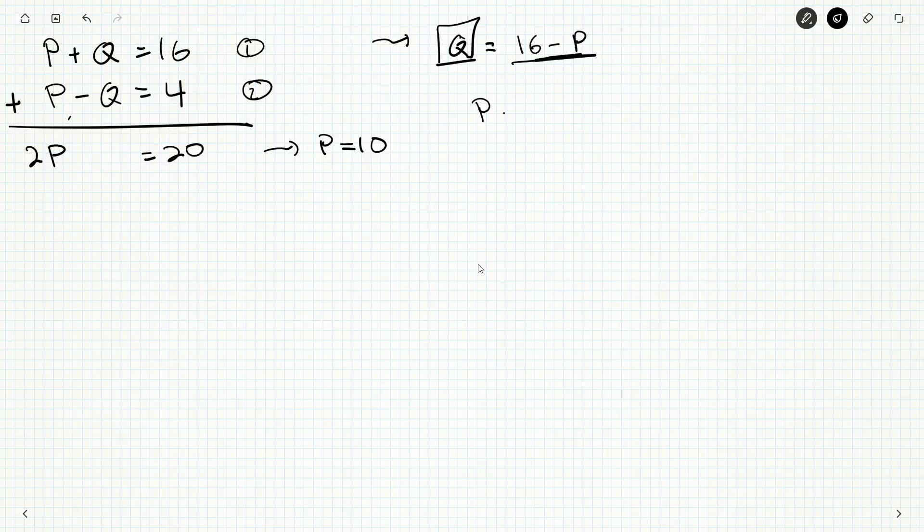Well, my second equation is P minus Q is equal to 4. I know what Q is. So as long as I'm very careful with this minus sign and these brackets here, I get P minus 16 minus negative P, which is plus P is equal to 4. 2P, bring the 16 over, 20, and once again we get P is equal to 10.